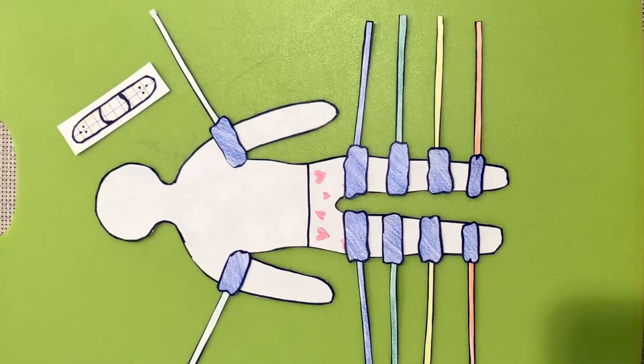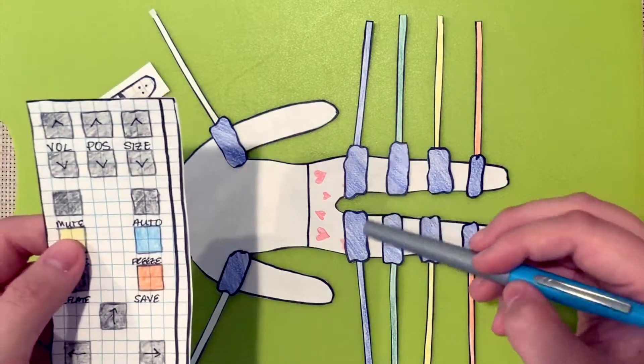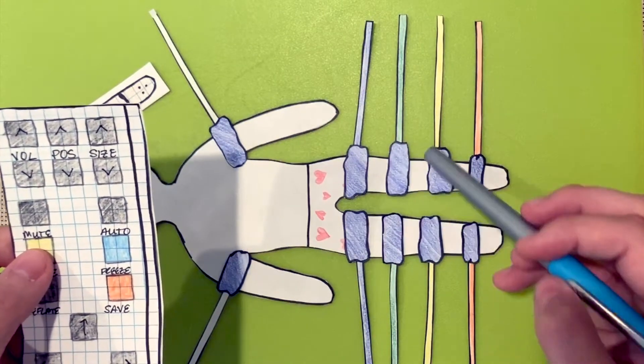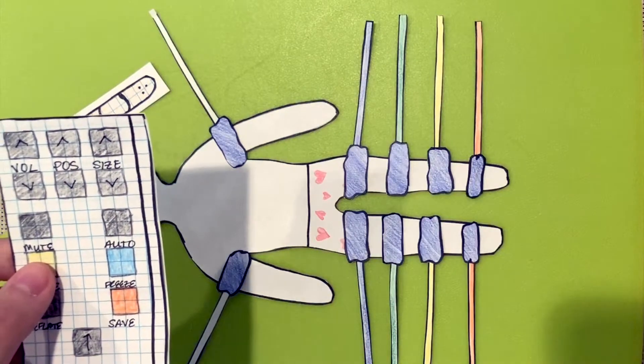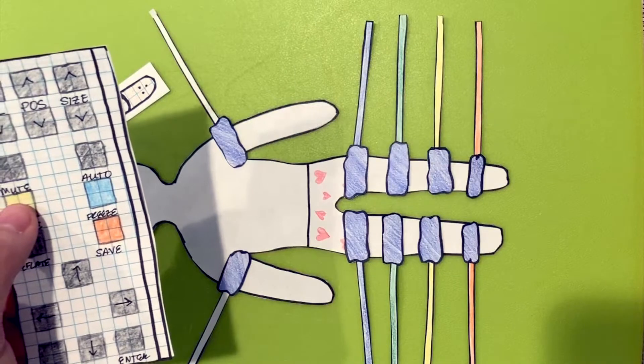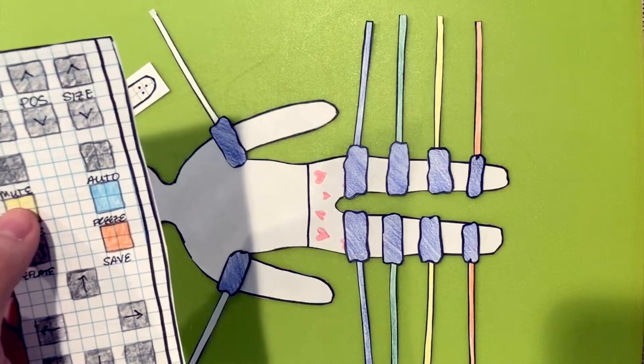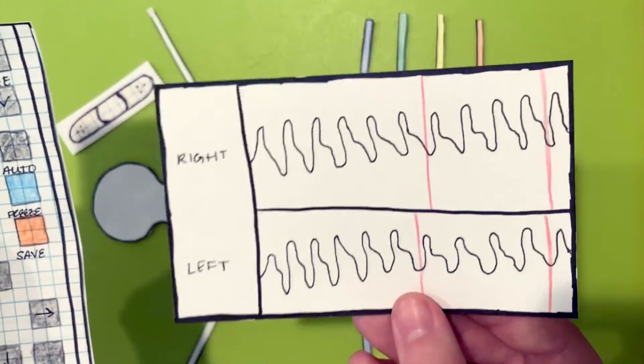PVRs record the change in limb volume related to each cardiac cycle. The pressure cuffs will stay on and the remote will be used to inflate the cuffs. The cuffs will inflate sequentially at a lower pressure from the top of the thigh to the ankles or the toes. While the cuffs are inflating, a waveform will appear on the screen. Wait for the waveform to stabilize.